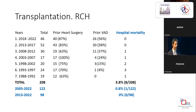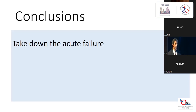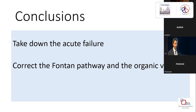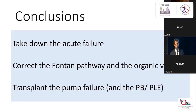In conclusion: take down the acute failure very quickly — really within hours. Correct the Fontan pathway and organic AV valve regurgitation when found. Transplant for pump failure, severe plastic bronchitis, and PLE, and get yourself very well organized to do that properly.